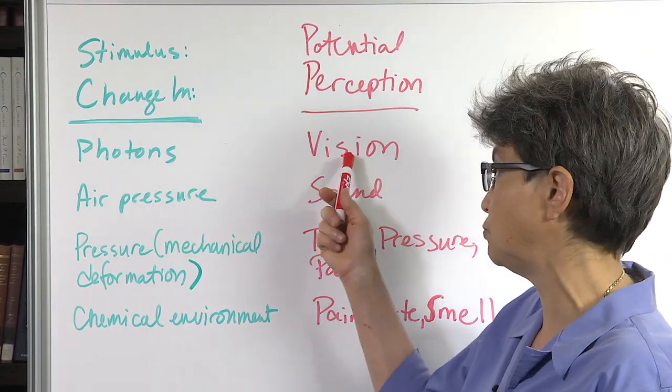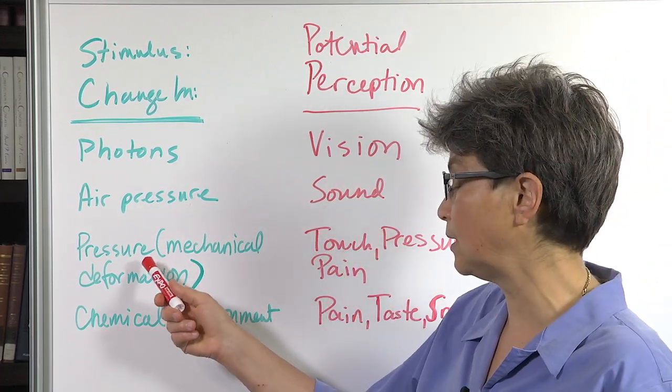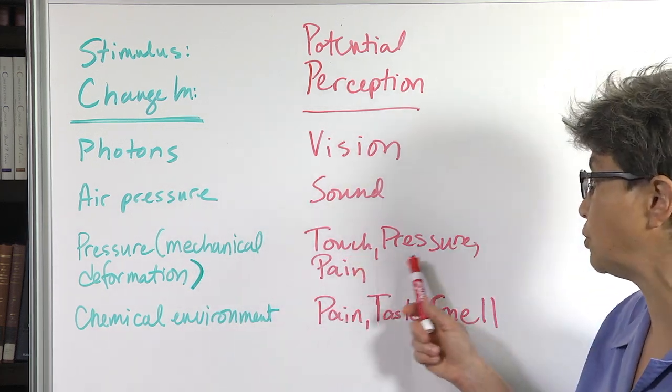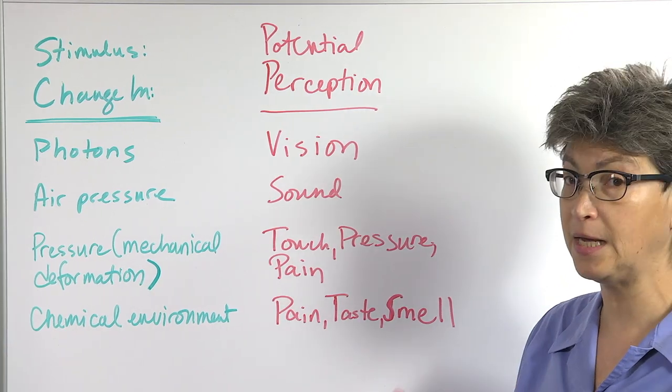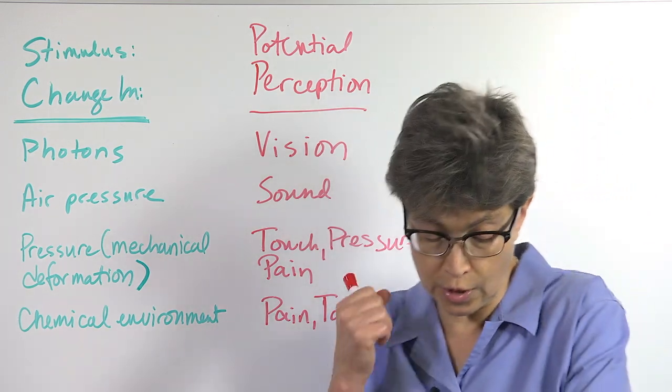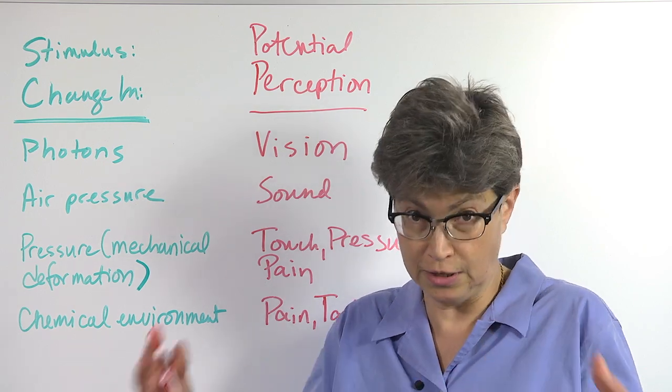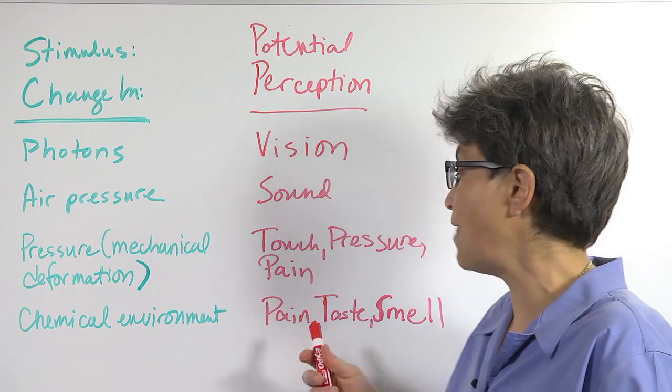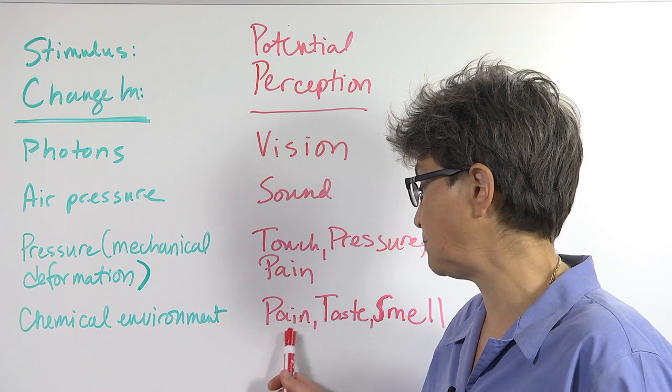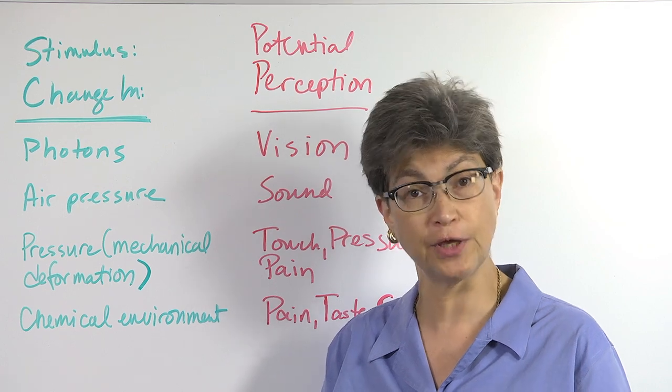So in the case of photons, it can produce vision. In the case of air pressure, it can produce a sound. In the case of pressure, mechanical deformation, it could produce touch, pressure, pain. Chemical environment, pain, taste, smell. So what do I mean by pain from a chemical environment? I mean, when the tissue is injured and all sorts of chemicals are released because there's inflammation, there's damage to the tissue, that is a chemical environment that elicits a, can elicit a perception of pain. So these three types of perceptions are called the chemical senses.